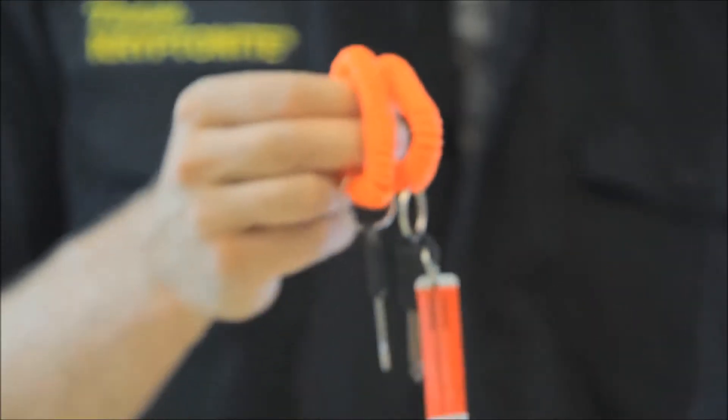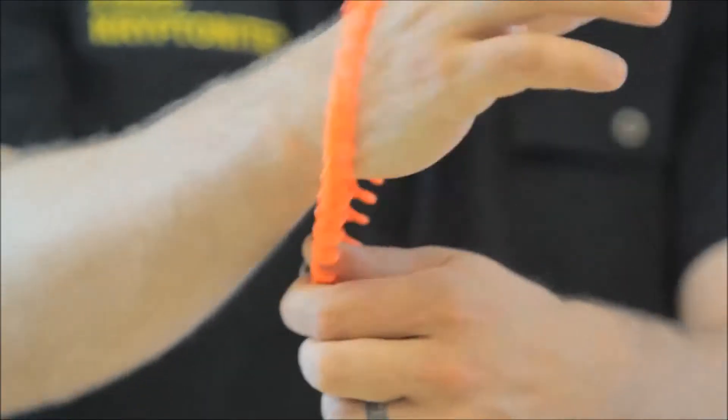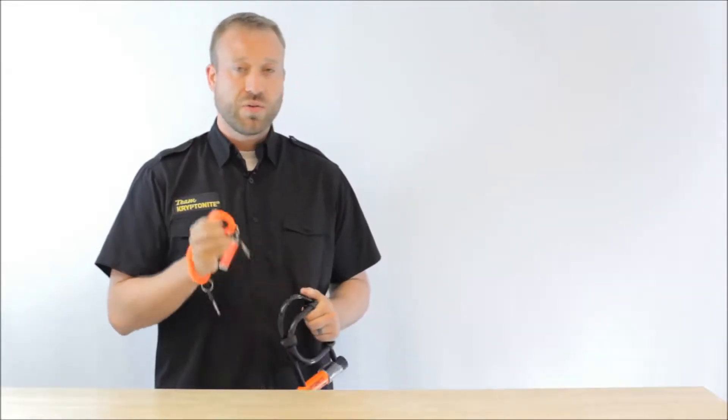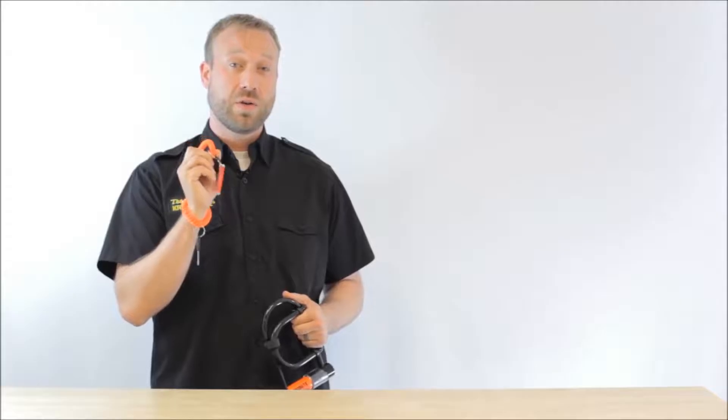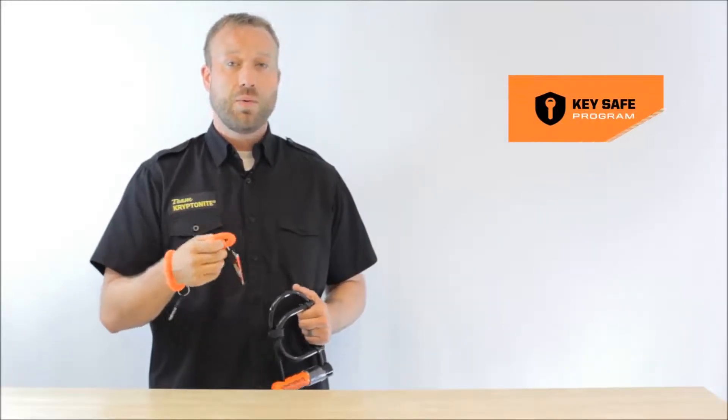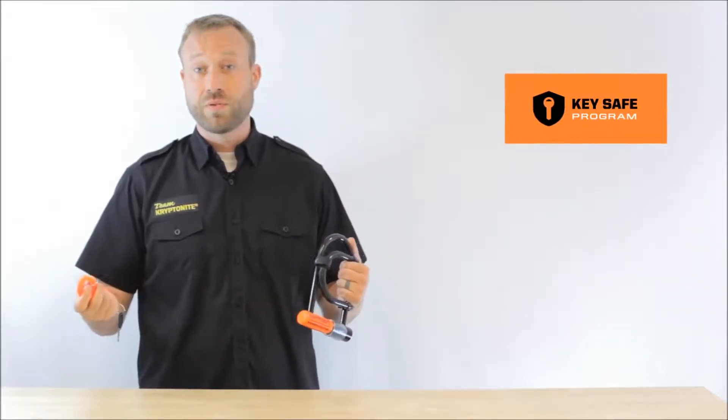The Messenger Mini Plus comes with two stainless steel keys, and they both come with this coiled wrist keychain. It's pretty cool. Don't forget to register these on kryptonitelock.com with our Keysafe program. That way if you lose your keys or misplace them, we'll be able to send you some replacement ones for free.